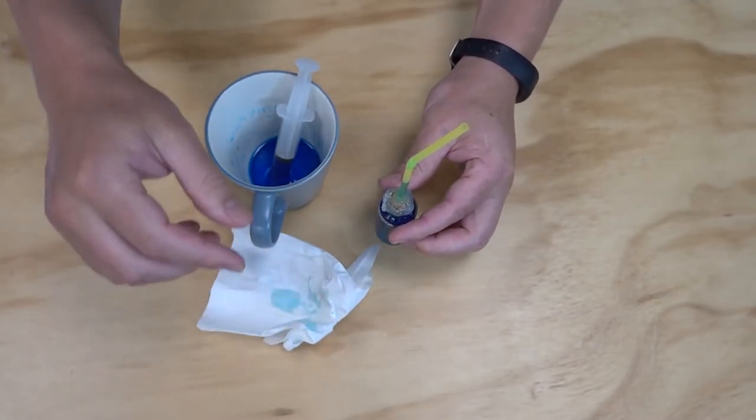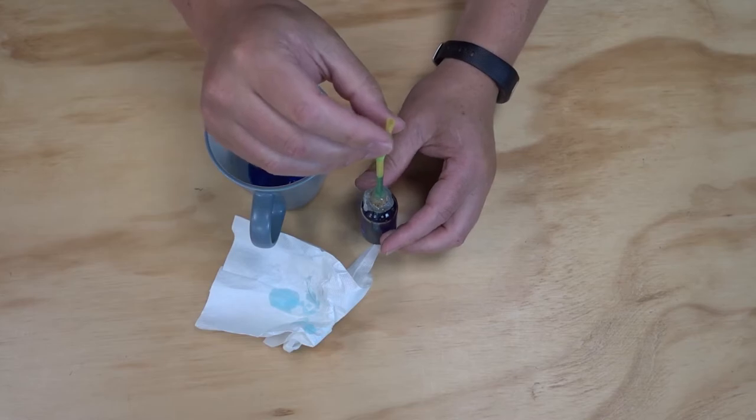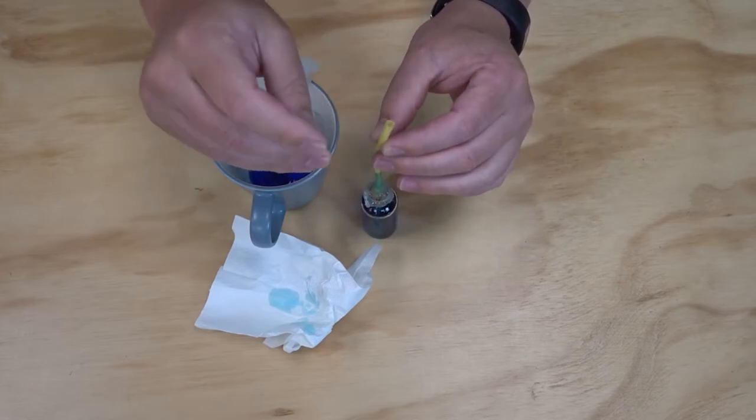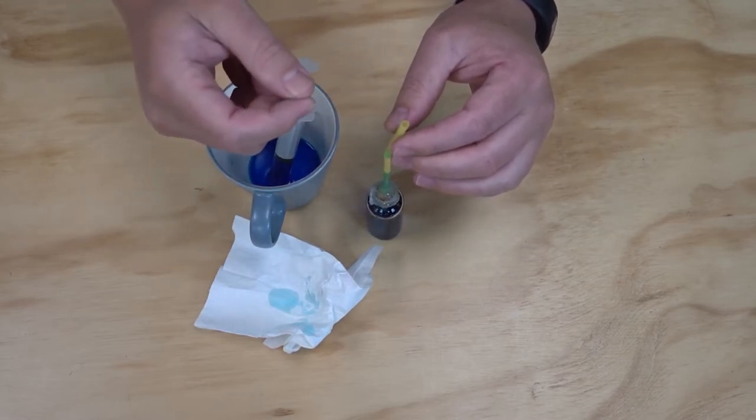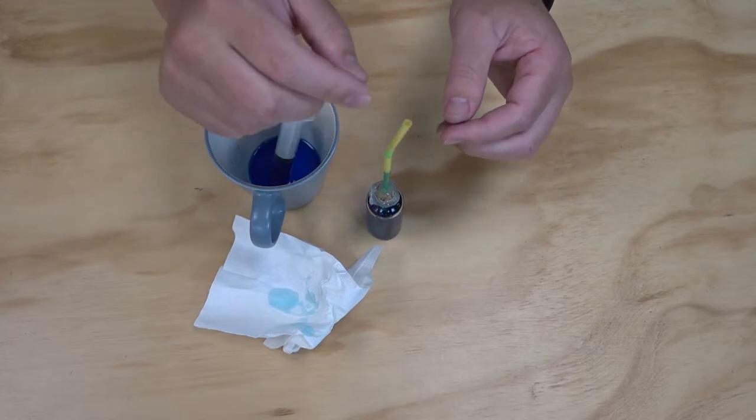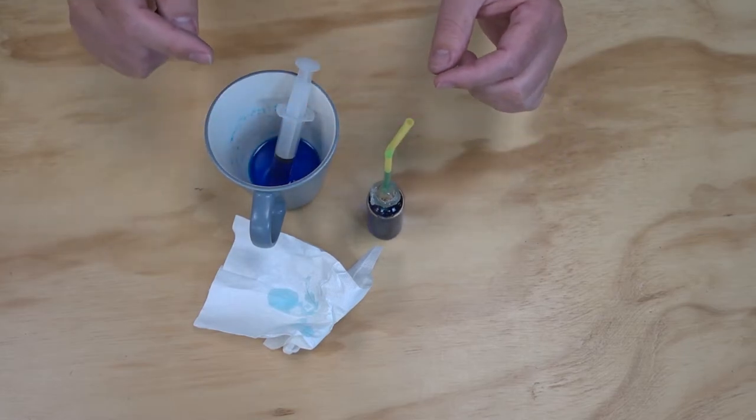The final thing that we need to do is to seal the top of our straw. I'm just going to use a little bit of glue to fill up that hole. You could bend it over and tape it closed, whatever works for you. But we need to again make sure that it's got a really airtight seal at the top.